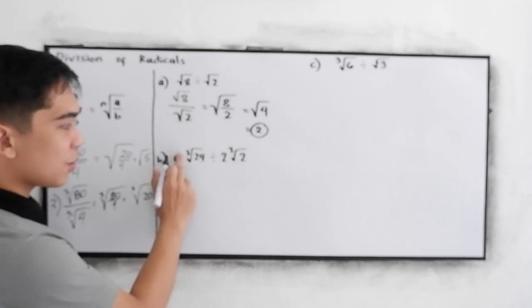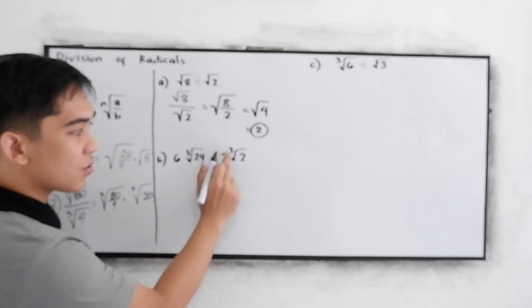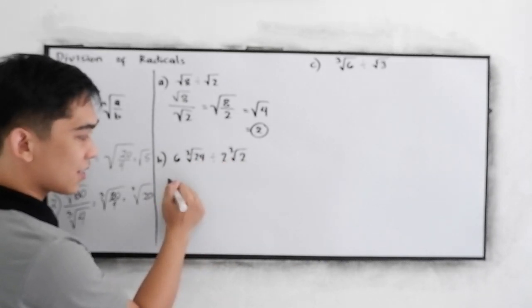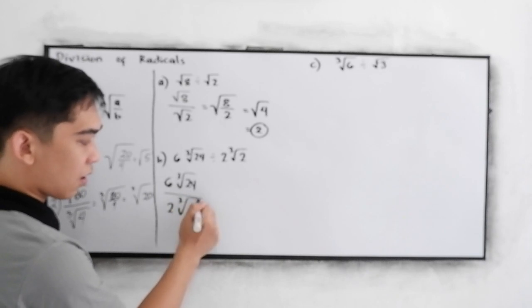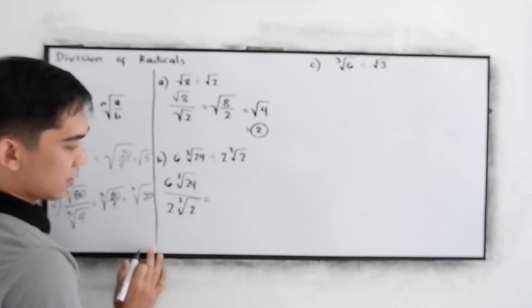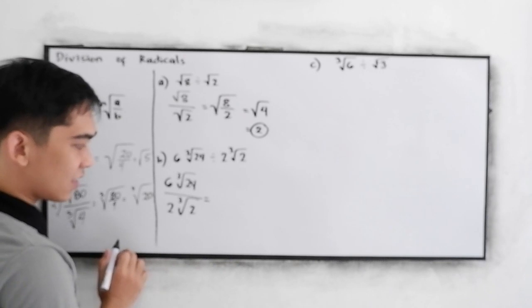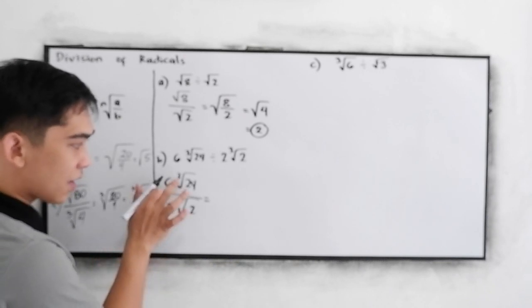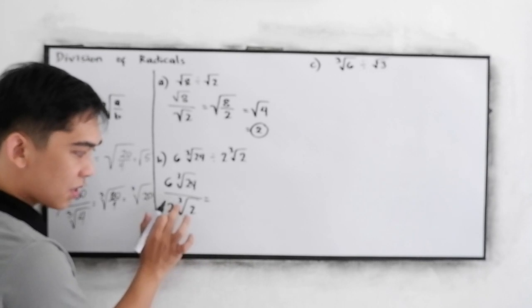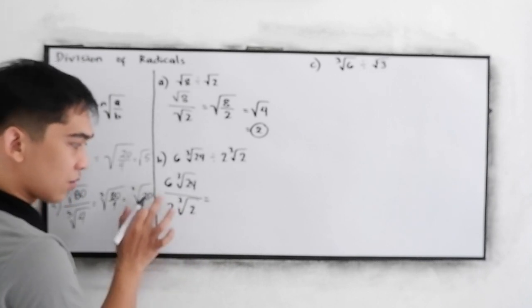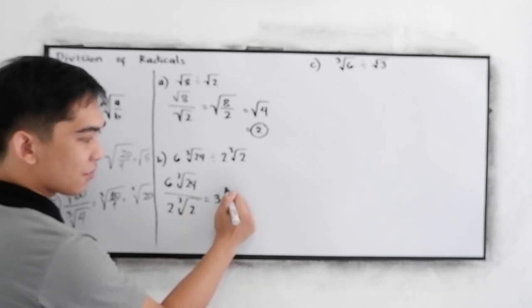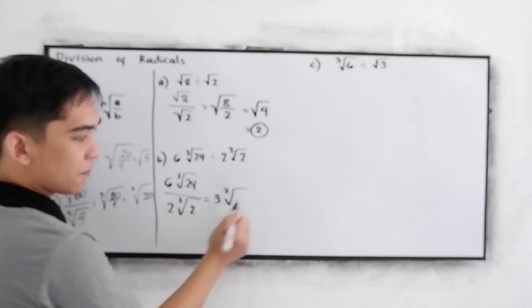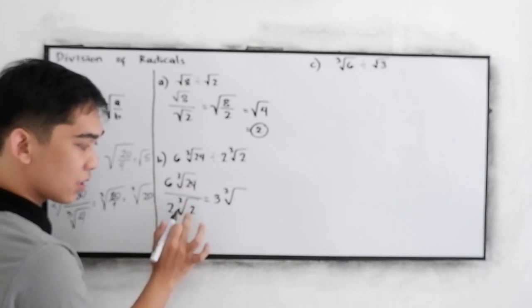Next, 6 cube root of 24 divided by 2 cube root of 2. Check the indices. Our index in the numerator is 3, index in the denominator is 3. So, 6 divided by 2, that is 3. Now, we have cube root of 24 divided by 2.